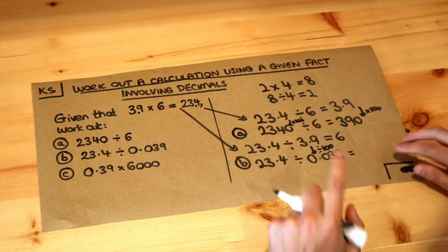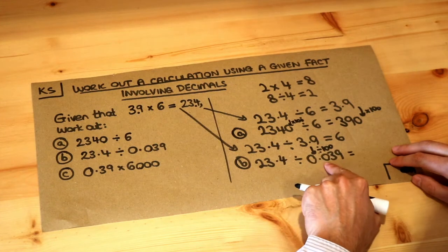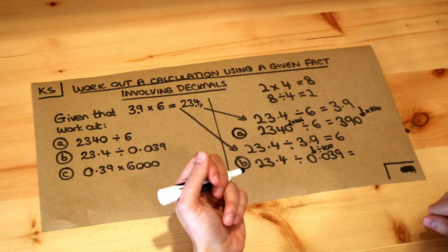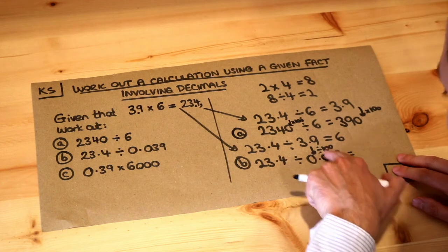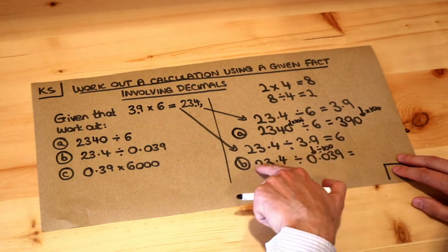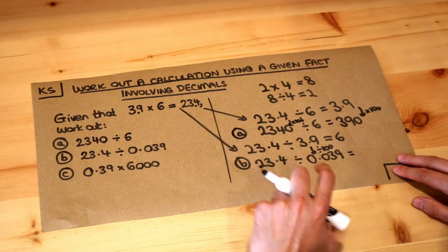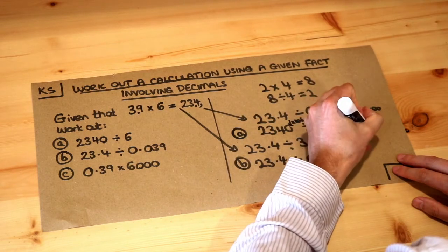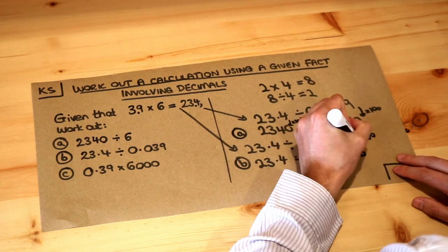Now be very careful here. When you divide by a smaller number, you end up with a bigger result. So this number you're dividing by becomes 100 times smaller. That means the overall result of this calculation will be 100 times bigger. So this is going to times by 100 and that's 600.